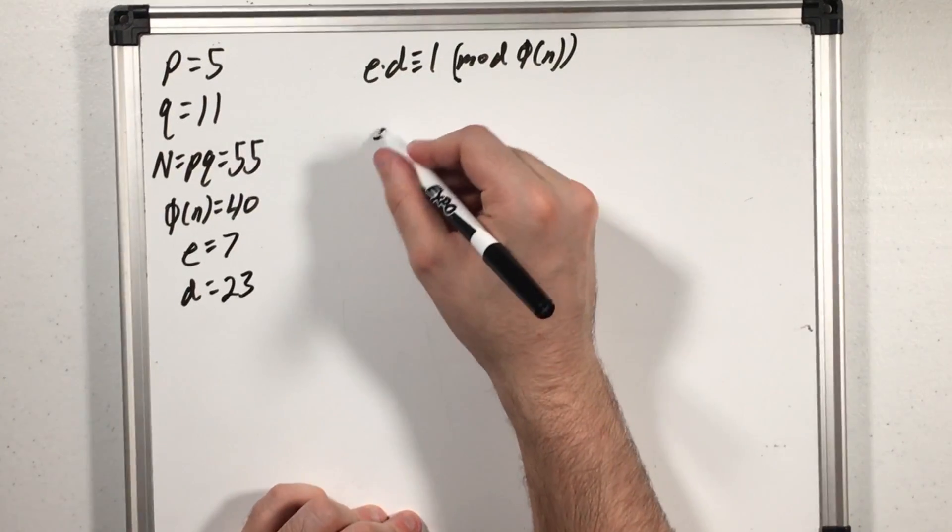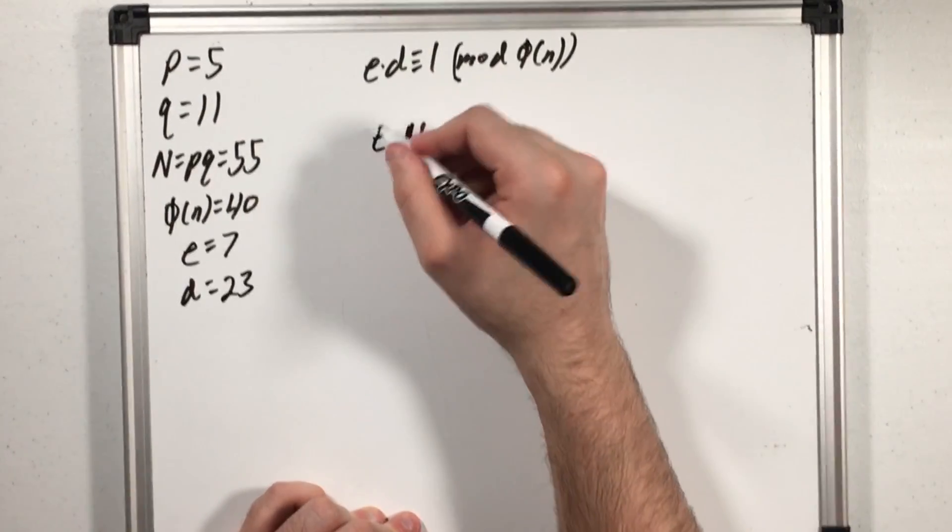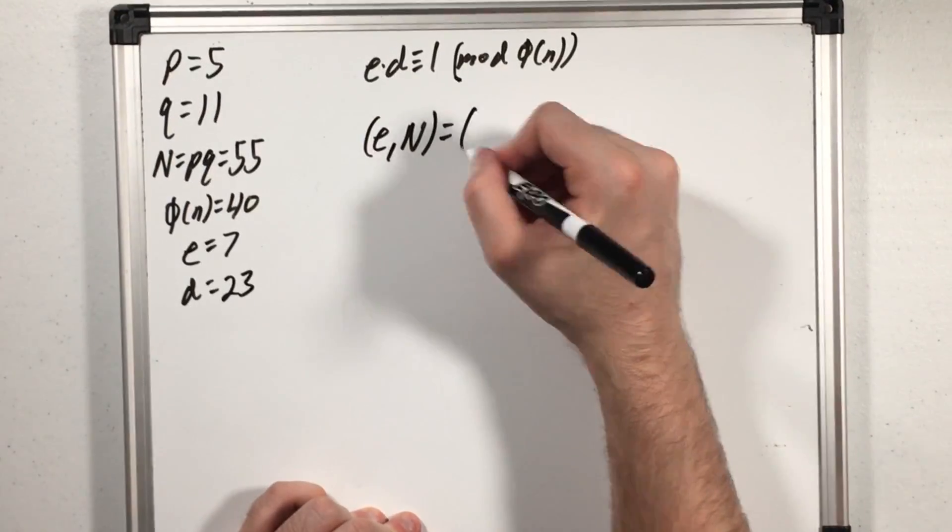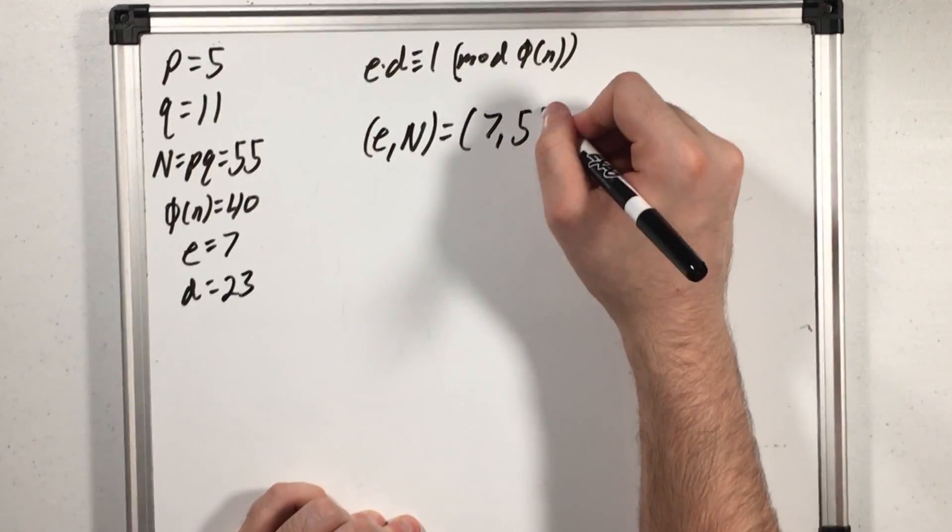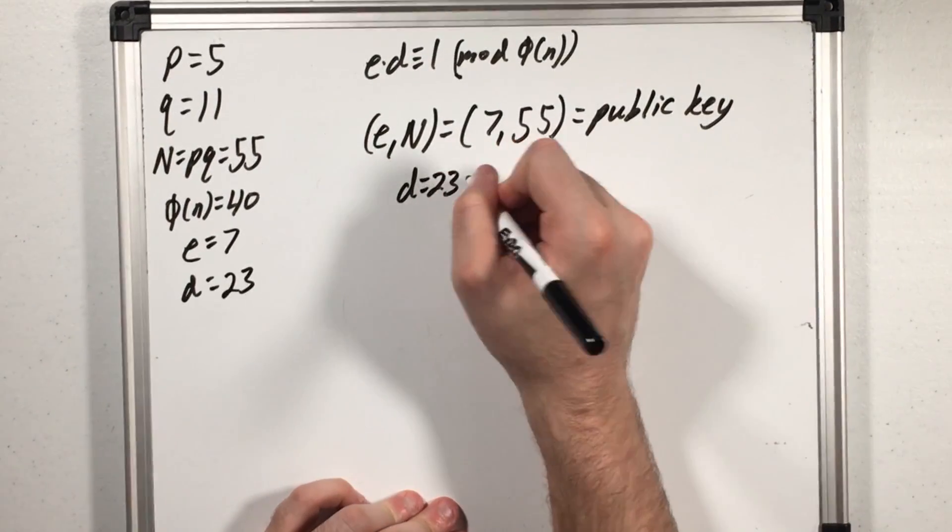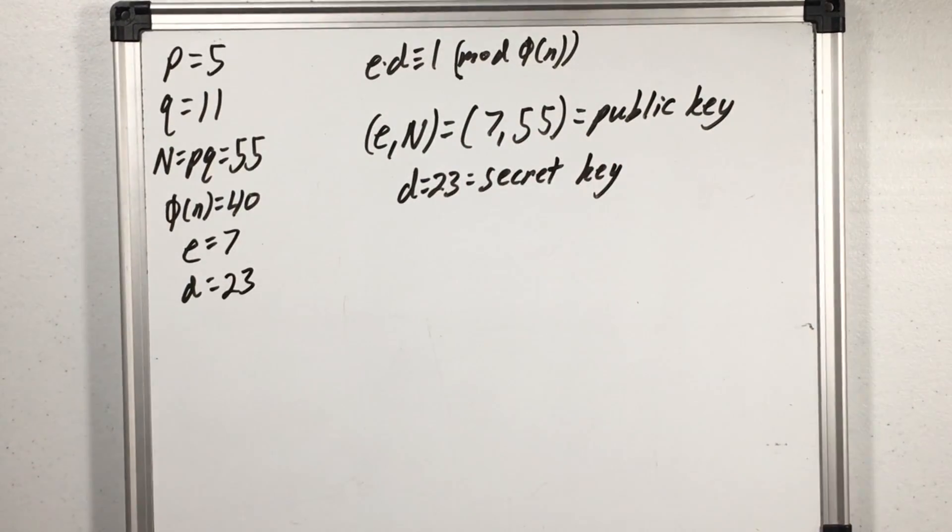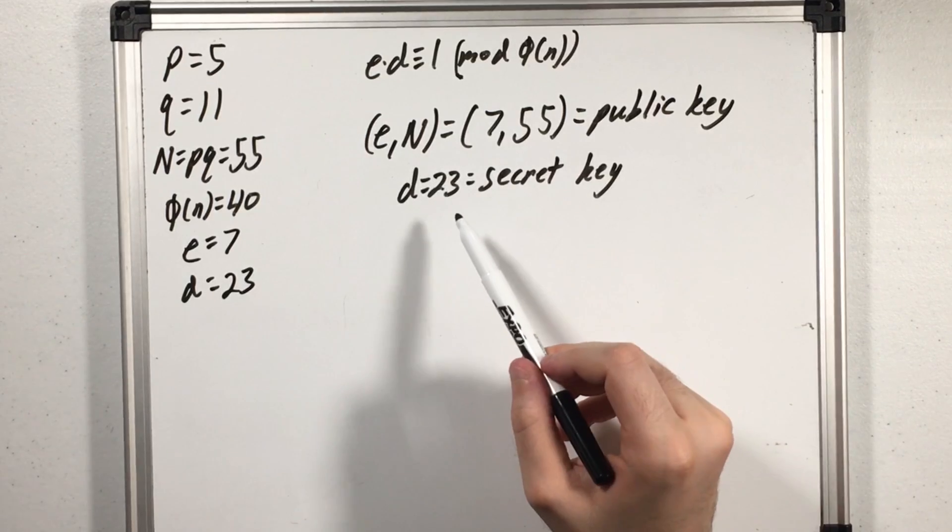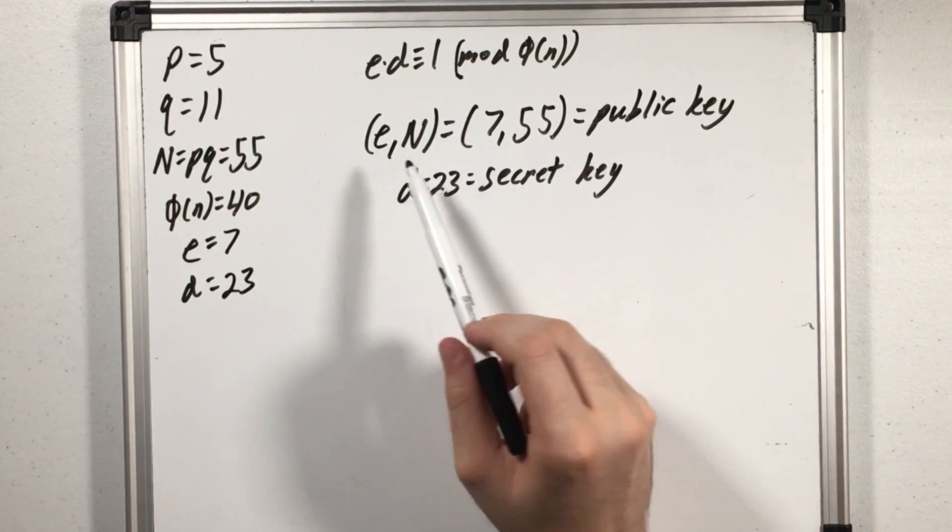One of those integers let's say e and the value of n I got are public information otherwise known as a public key. The other value d I keep to myself and remember this value of d is hard to calculate even when someone knows the values of e and n.